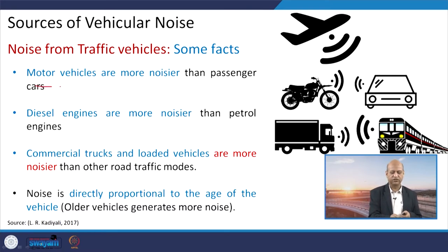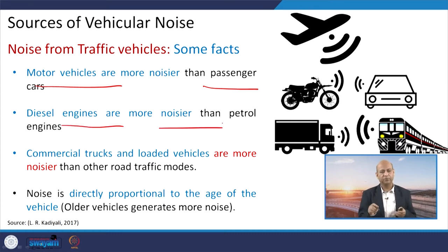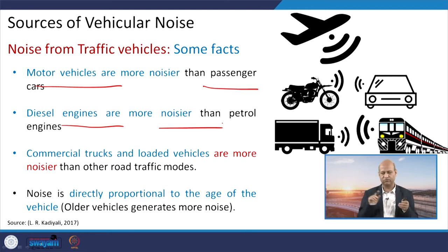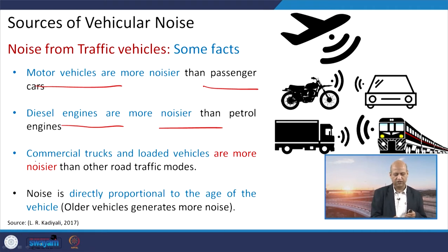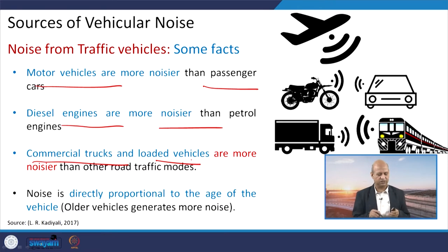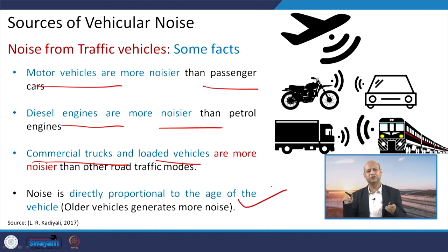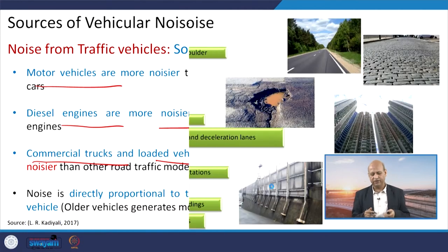Some facts about traffic factors: motor vehicles are noisier than passenger cars. Diesel engines are noisier than petrol engines — although research has made diesel engines much quieter, their working principle still produces more sound. Commercial trucks, loaded vehicles, and heavy vehicles make a lot of noise due to high friction between road and tyres. The age of a vehicle also matters — when parts are loose, vibrations increase and the noise level rises.